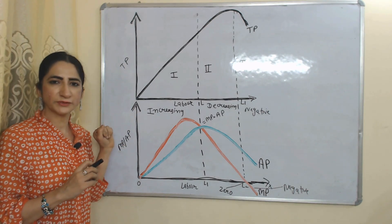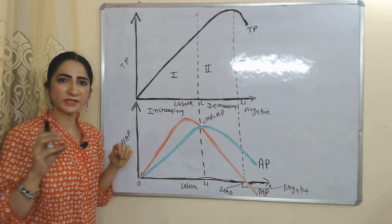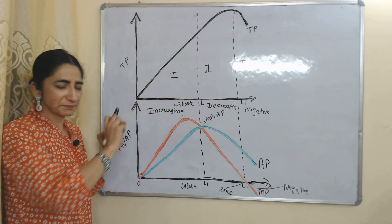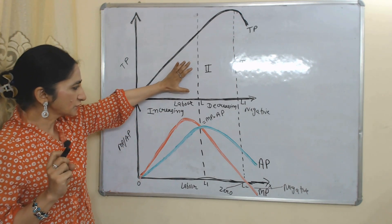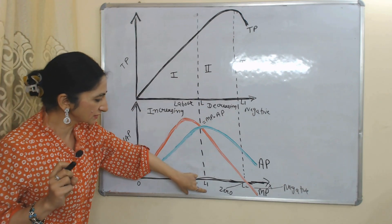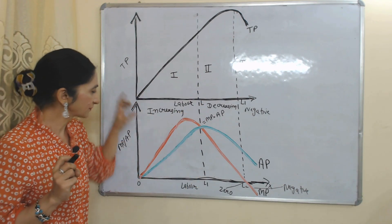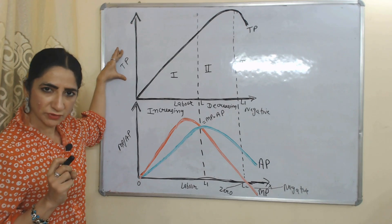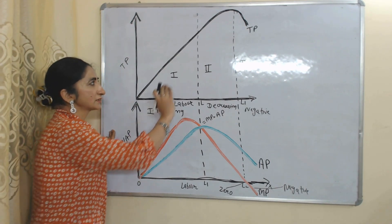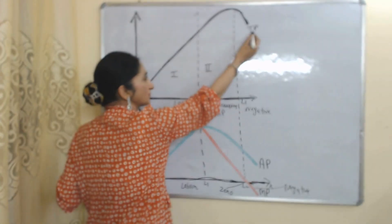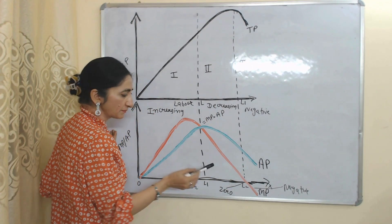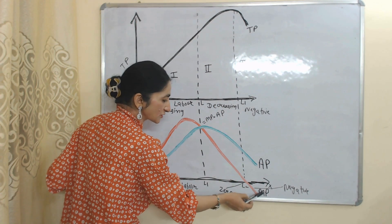Now we will see the diagram of this law. If we convert the previous table into a diagram, we get exactly this. There are two connected diagrams. On the x-axis of both diagrams, we have labor. On the y-axis, one side shows total product of labor, and the other side shows marginal product and average product of labor. The black curve represents total product, the green curve represents average product, and the red curve represents marginal product.